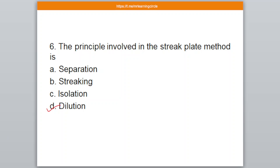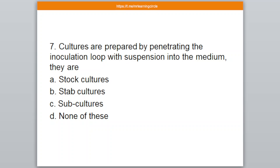Question number 7. Cultures are prepared by penetrating the inoculation loop with suspension into the medium — they are: A: Stop culture, B: Stap culture, C: Subculture, D: None of these. The correct answer is option number B — Stap culture.